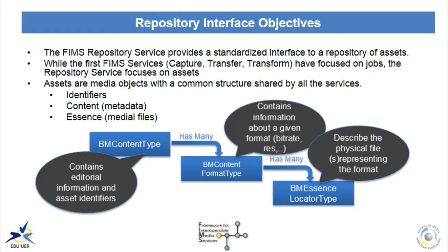FIMS defines a set of interfaces and specifies a common data model used by all services to ensure their interoperability, which is the fundamental goal of FIMS. It is important to remember that FIMS specifies interfaces and a data model. In the FIMS data model, an asset is defined by one or more identifiers, the content — the metadata that describes the asset — and the essence, the actual media files. An asset is represented by the BM content object.